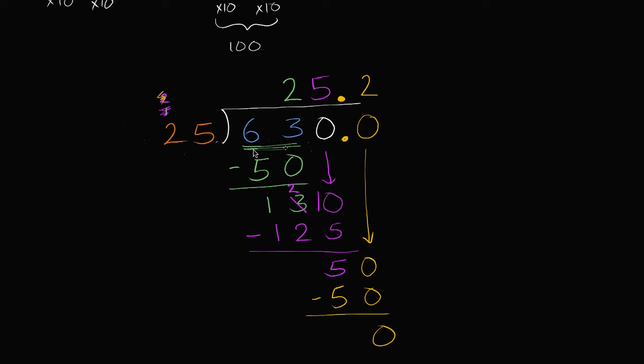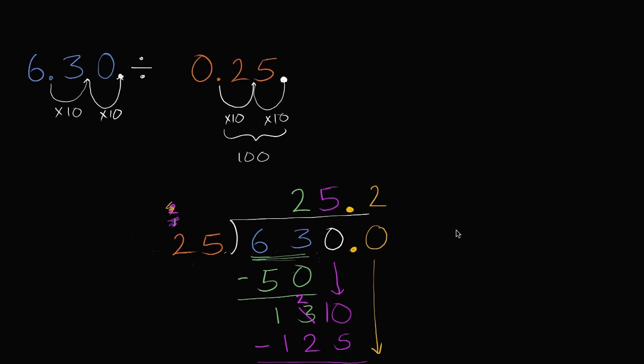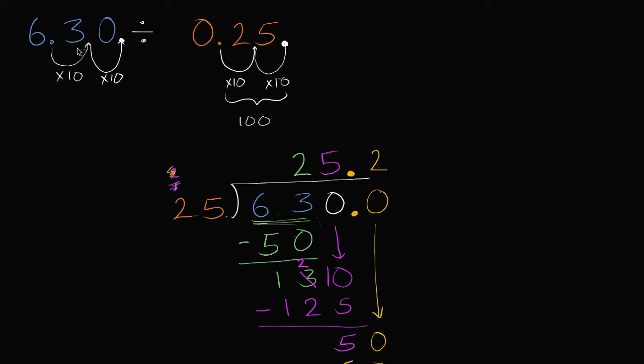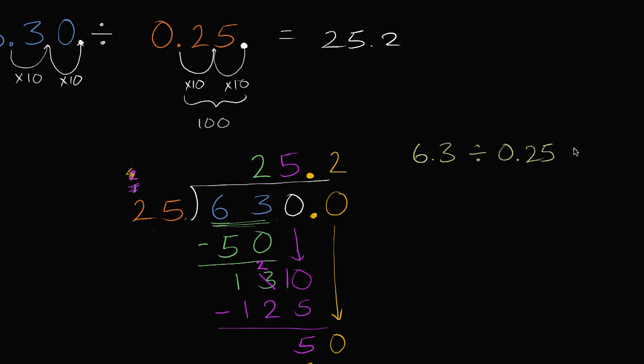You take 630 divided by 25, it's 25.2. Or if you look at our original problem, which was 6.3 divided by 0.25, that also is 25.2. So our original problem was 6.3 divided by 0.25, which we just figured out is 25.2. And we're done.